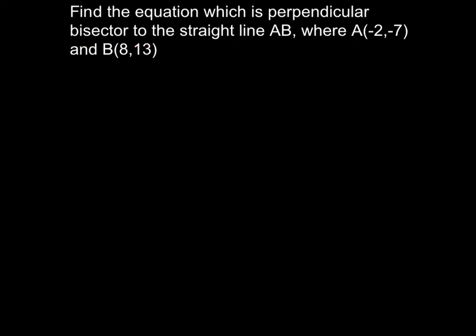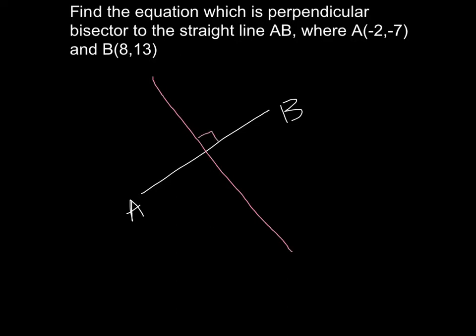I'm going to roughly sketch out to give you some idea. So it's basically something like this. If this is the straight line AB, the perpendicular bisector divides AB into half and forms a 90 degree angle here. So when I say divide AB into half, it means this straight line will pass through the midpoint of AB.